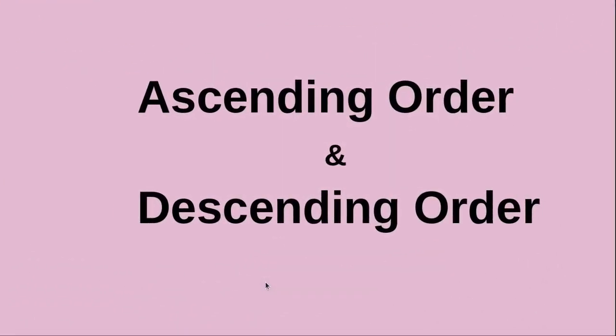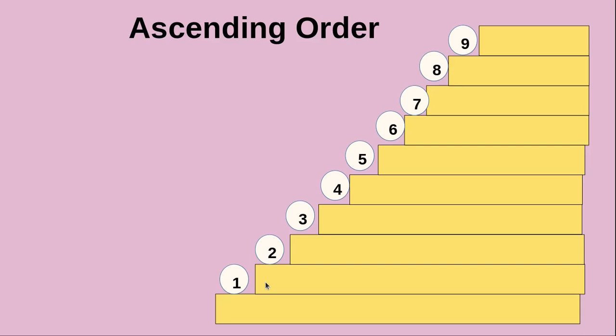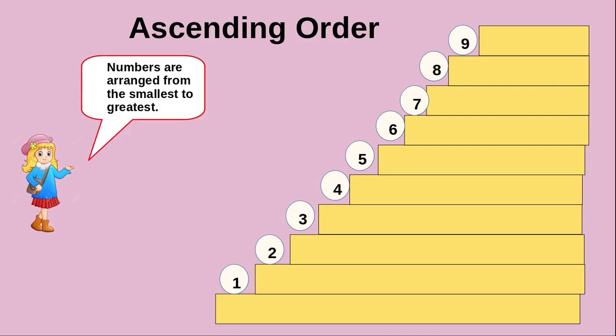Hello children, today we are going to see ascending order and descending order. First we will see the ascending order. So what is ascending order? Ascending order is nothing but the numbers are arranged from smallest to greatest. We are going to arrange the numbers from 1 to 9 — that will be called ascending order.